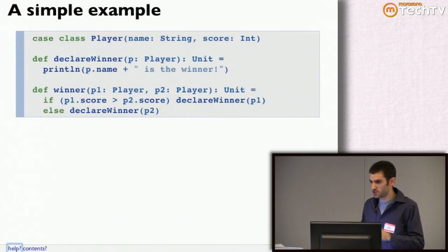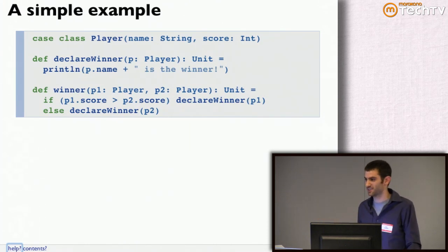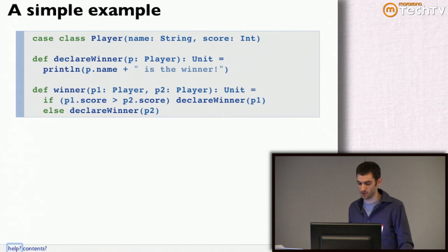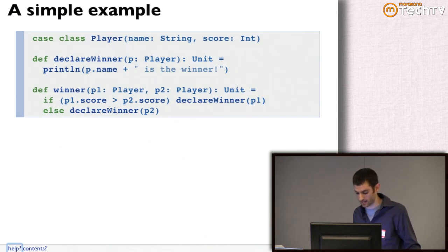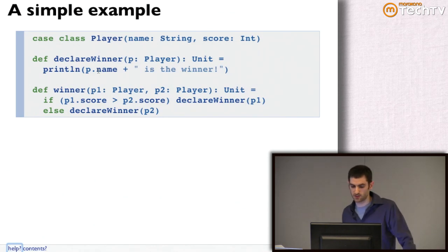I'm going to demonstrate this starting with a very simple toy example, just trying to give an intuition. This example is actually taken from the first chapter of Functional Programming in Scala, which we just released the MEAP for today. We have a player case class, and a function declare winner which takes a player and has the side effect of printing to the console. And then we have this winner function, which figures out who the winner is and displays it.